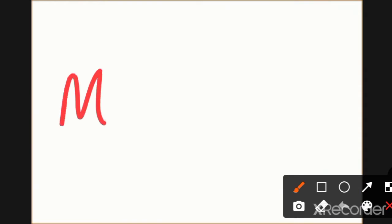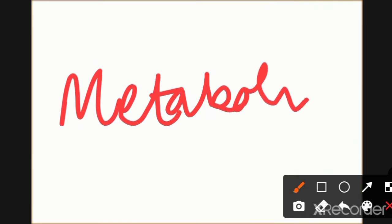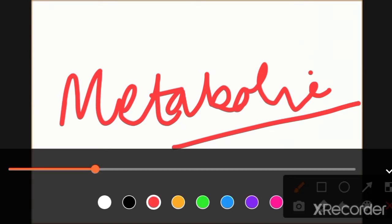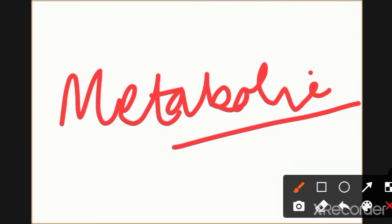First, you should know what diabetes is. It is a metabolic disorder — people say that if glucose is more, we call it diabetes. But diabetes is a metabolic disorder, not just a glucose level issue. It affects our body's metabolism of proteins and glucose and fats.